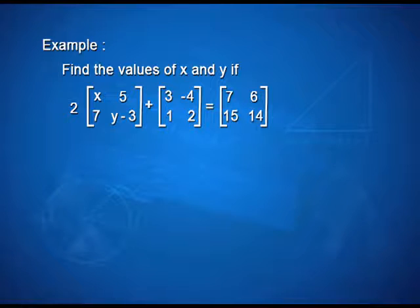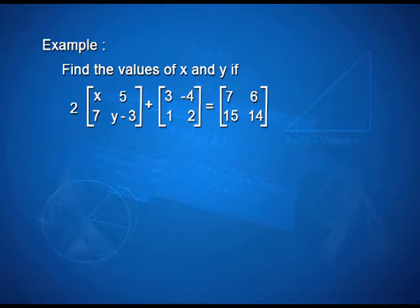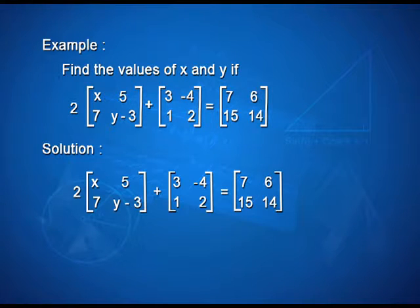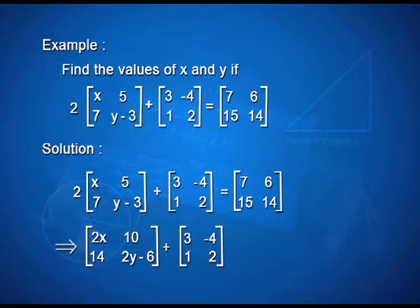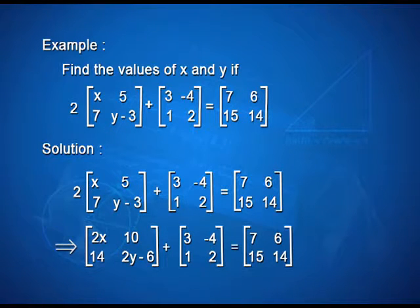Let us take up one example. Find the values of x and y if 2 times the matrix [x, 5; 7, y minus 3] plus [3, minus 4; 1, 2] is equal to [7, 6; 15, 14]. For the solution, we take the LHS: 2 into [x, 5; 7, y minus 3] gives [2x, 10; 14, 2y minus 6], and adding [3, minus 4; 1, 2] gives the matrix equated to the RHS [7, 6; 15, 14].